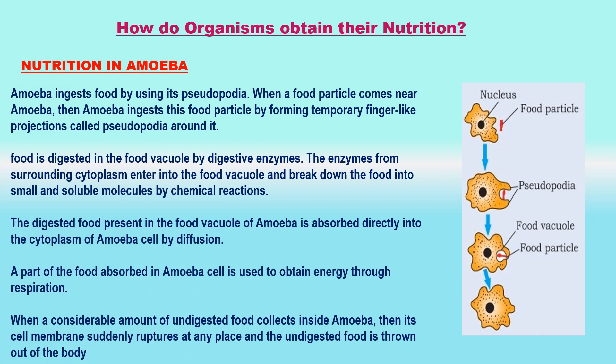How do organisms obtain their nutrition? Since the food and the way it is obtained differ, the digestive system is different in various organisms. In single-celled organisms, the food may be taken in by the entire surface. But as the complexity of the organism increases, different parts become specialized to perform different functions.